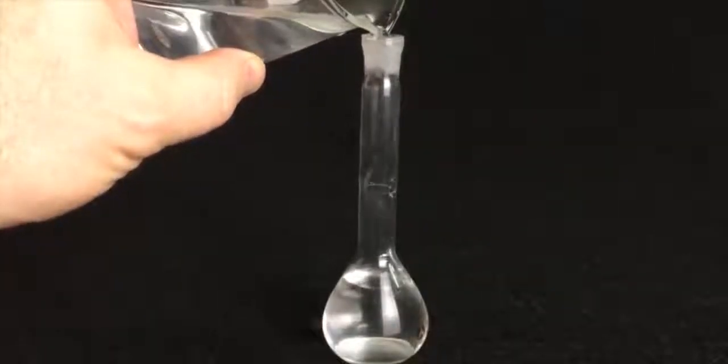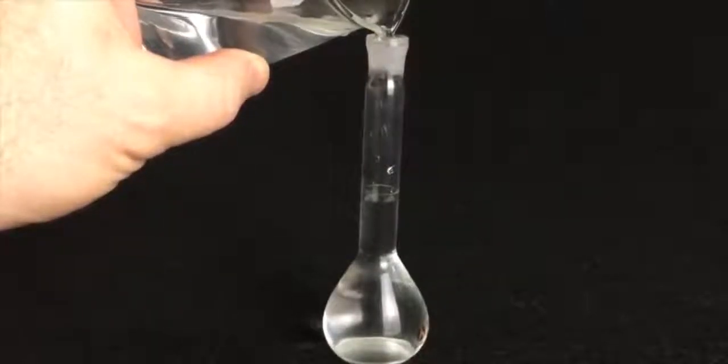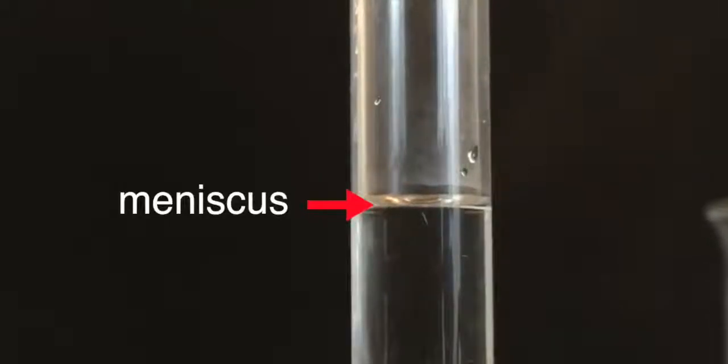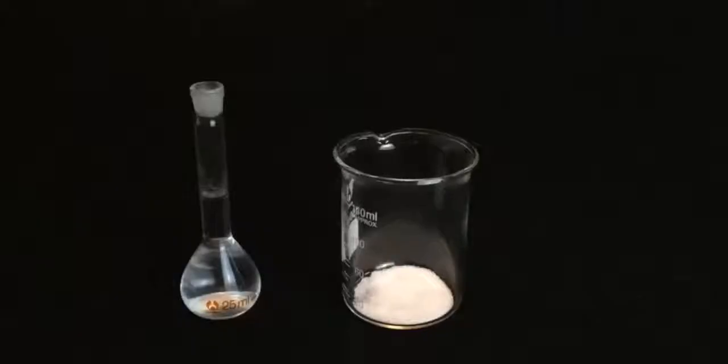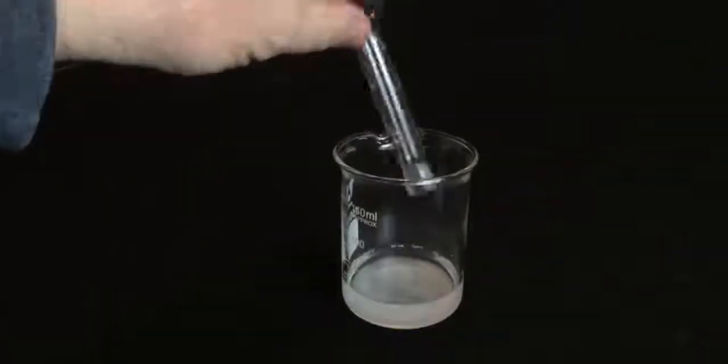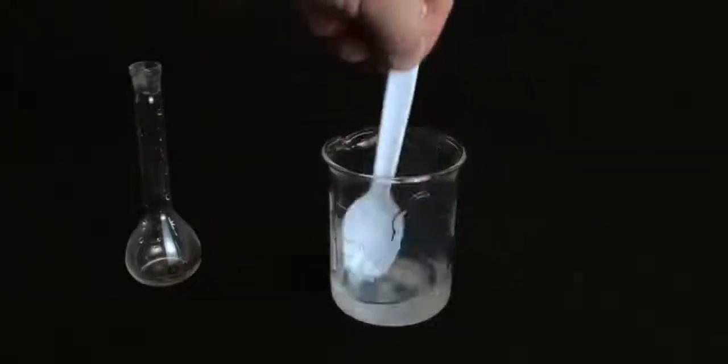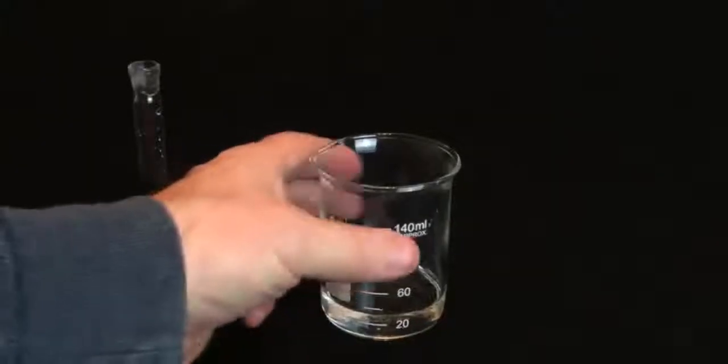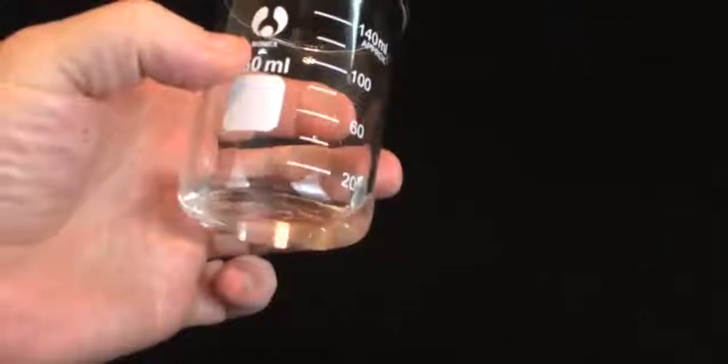Next, we fill the volumetric flask with distilled water until the bottom of the meniscus, that little dip that you see in the top of the column right here, until that is exactly level with the line. Then I dump that in with the sugar, stir it thoroughly until everything dissolves, and voila, our 0.10 gram per milliliter sucrose solution. Easy.